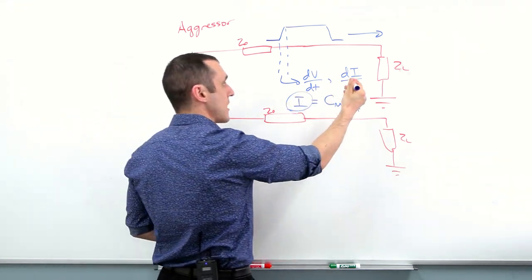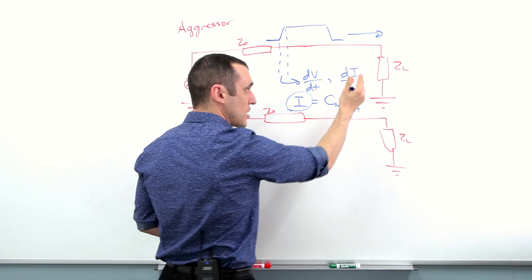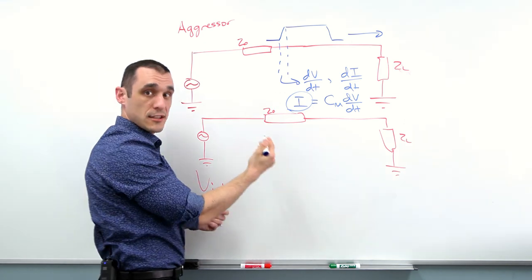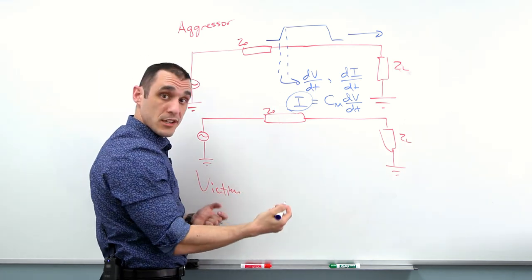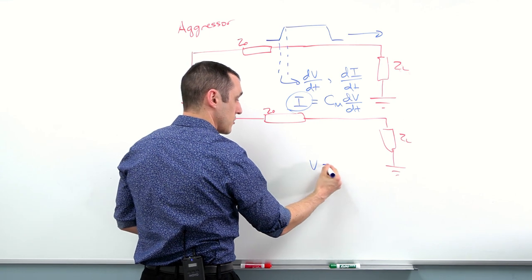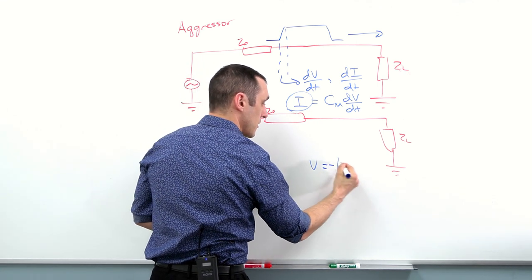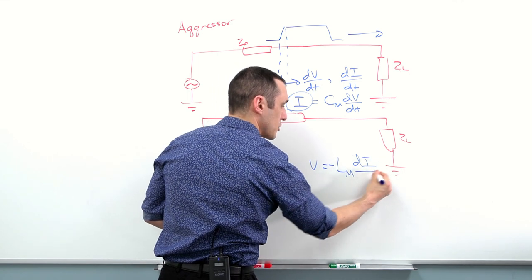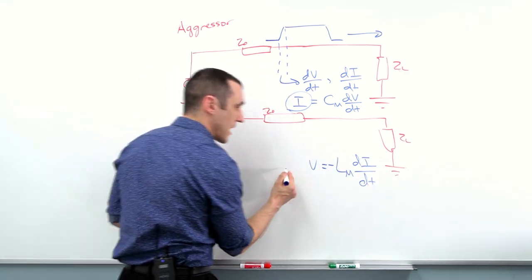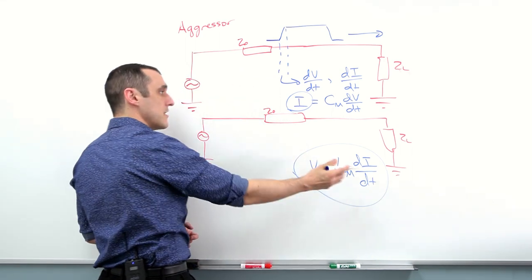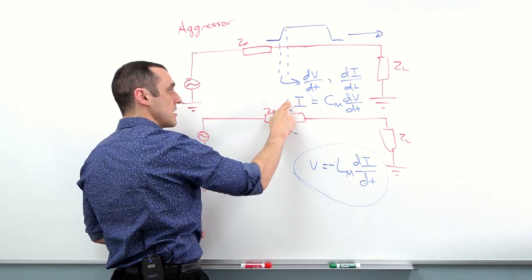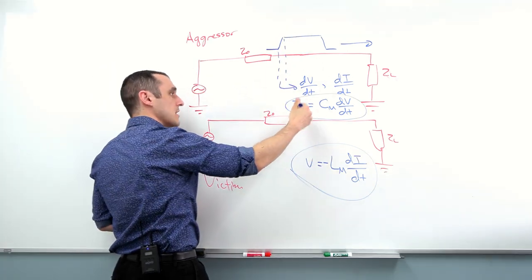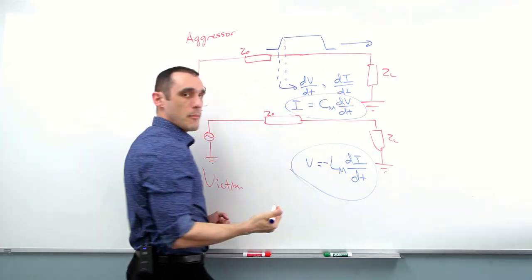The magnetic field generated by the changing current in the aggressor trace induces an electromotive force — a voltage — in the victim trace. So the voltage induced is due to the mutual inductance multiplied by the rate of change of the current over time. These two terms — mutual inductance driving voltage and mutual capacitance driving current — are what determine crosstalk.